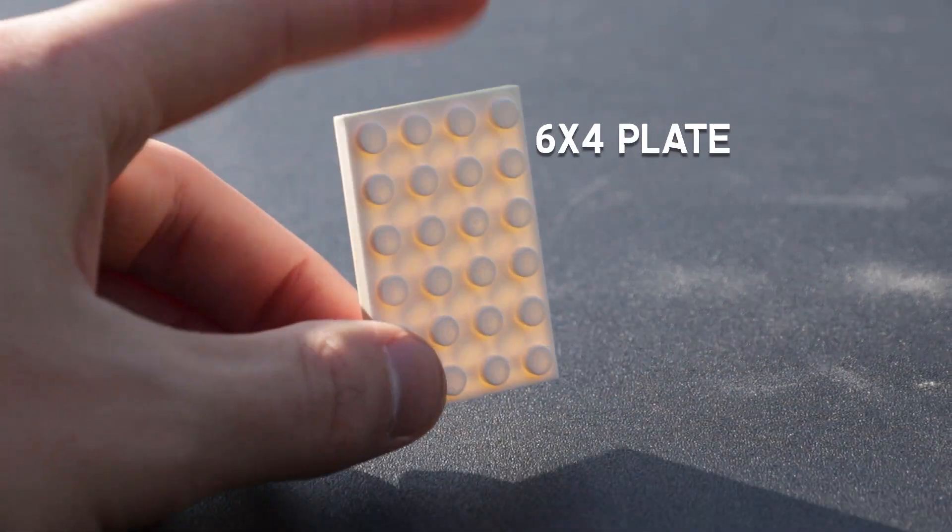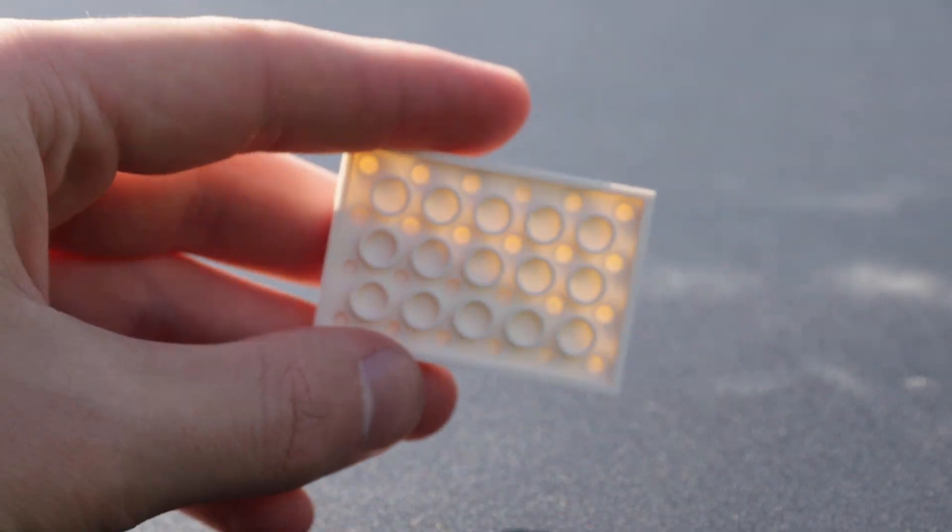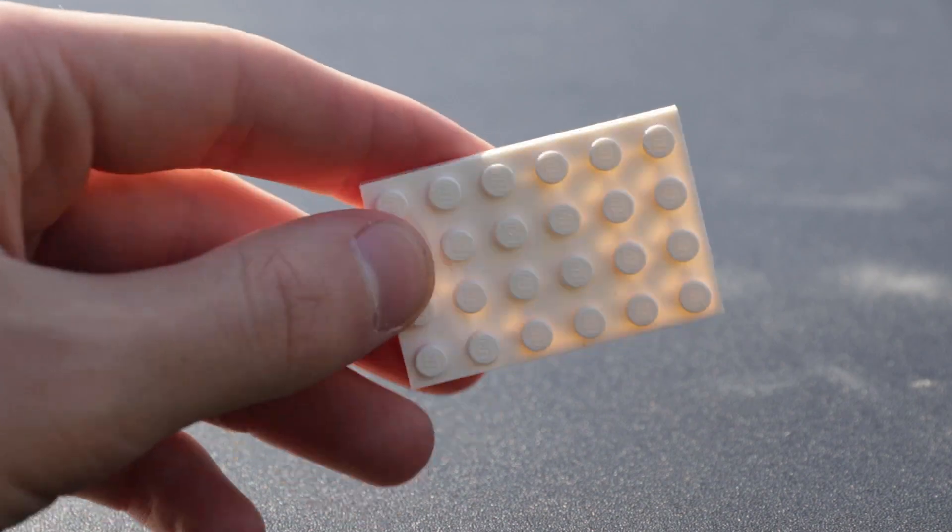So let's just jump right into it. The first thing you want to do when building this is grab a 6x4 plate. You can do it in any color because it won't be seen, but I would stick with this size because it's kind of the sweet spot for minifigures.